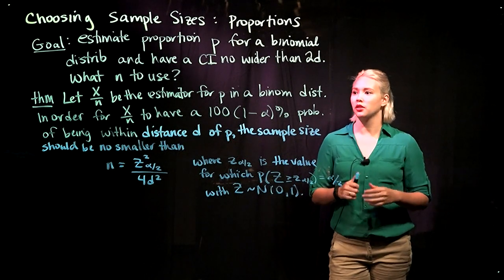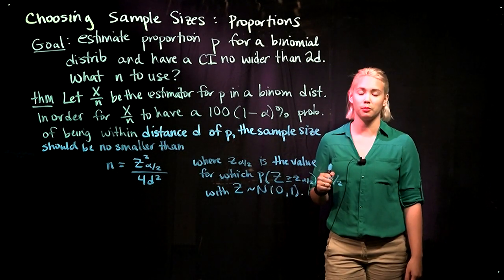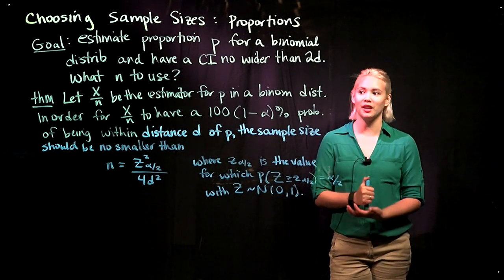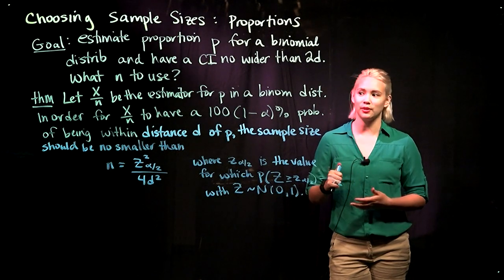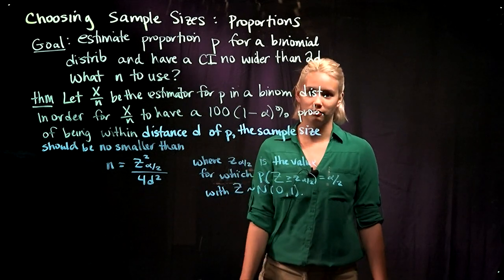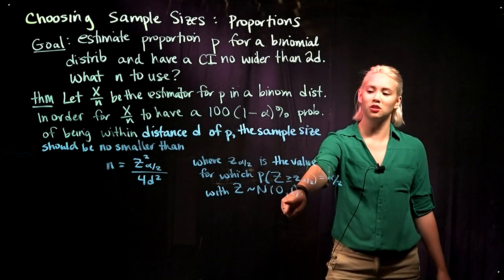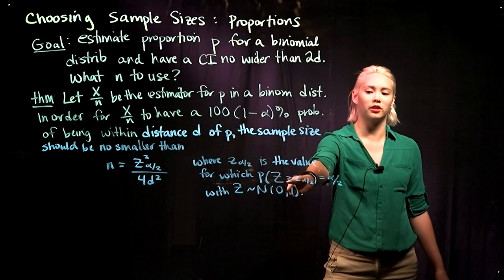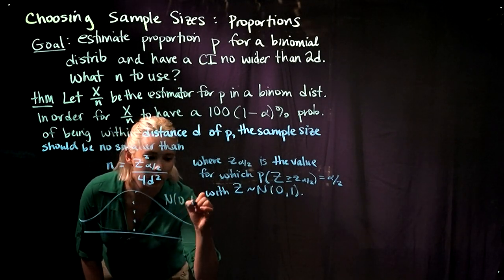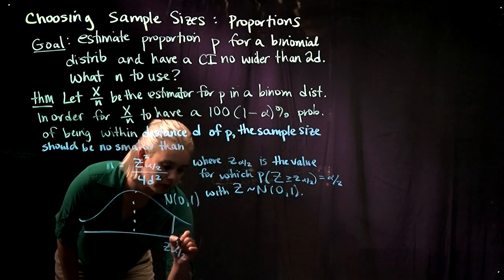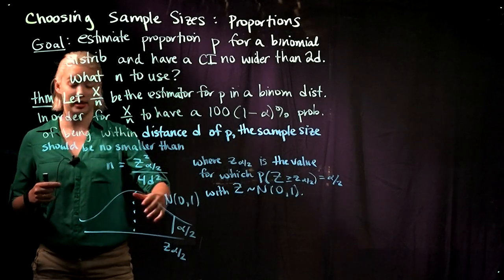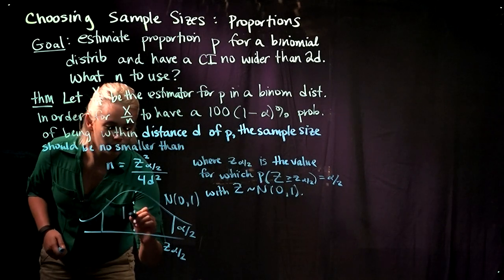Here's a theorem we'll be proving. If we have an estimator X over N for a proportion P in a binomial distribution, then in order for X over N to have a 100(1−α)% probability of being within distance D of proportion P, the sample size should be no smaller than N equals Z(α/2) squared divided by 4D squared. Z(α/2) is the value such that if Z is a standard normal, the probability that Z is greater than or equal to Z(α/2) equals α/2. We use Q-norm or a table to get Z(α/2) once the confidence level 1−α is specified.